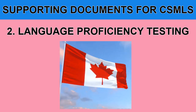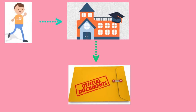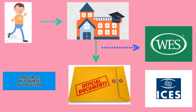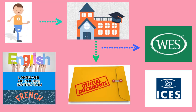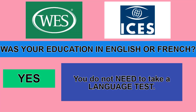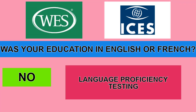The second requirement is your language proficiency testing. Canada is a bilingual country, so language proficiency simply raises the question: were you educated in English or French? When you go to your educational institution and ask for documents forwarded to WES or ICES, you need to request a separate letter confirming your language of MLT instruction. If your credential evaluation states your language of instruction was English or French, you do not need to take a language test.